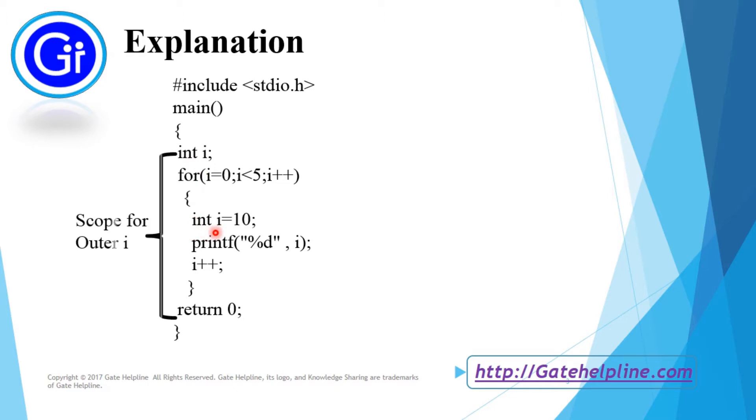We had concluded that this one is the scope for outer i which means this value of i is available for this entire space, and this one is the scope for this i and this will be available inside the for loop only.